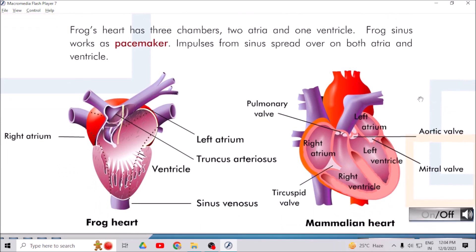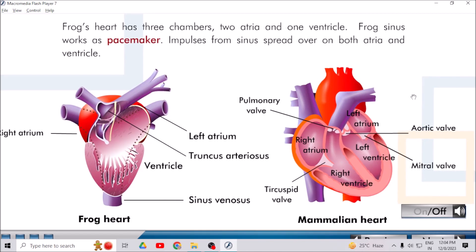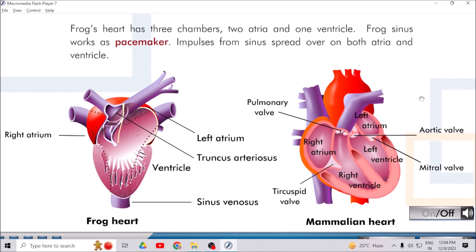Frog's heart has three chambers: two atria and one ventricle. Frog's sinus works as pacemaker. Impulses from sinus spread over both atria and ventricle.